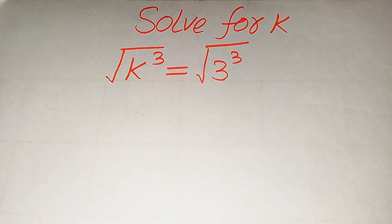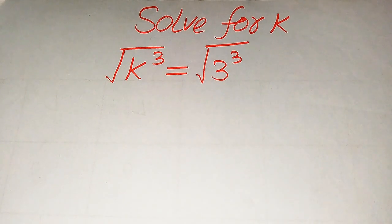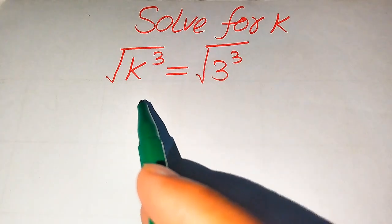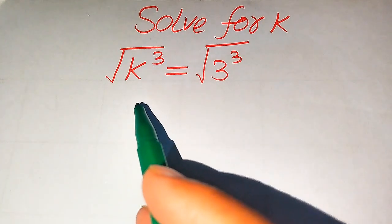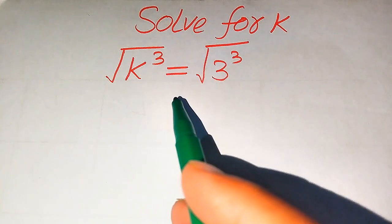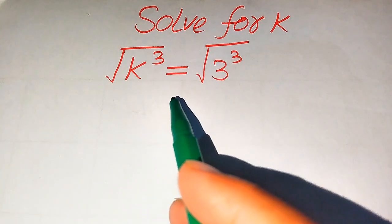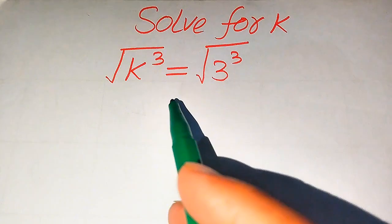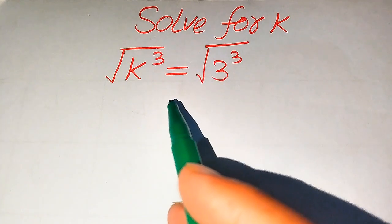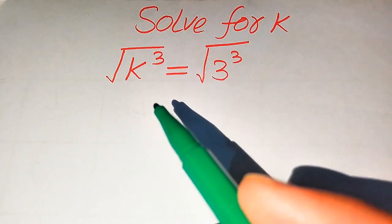Hello everyone. How to solve this problem for the values of k, if we have the square root of k cubed equals the square root of 3 cubed. We solve this problem for all the values of k.